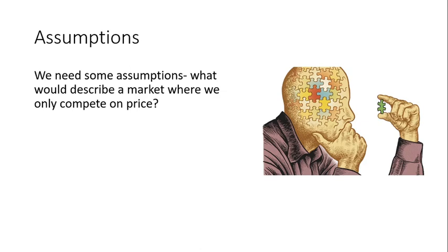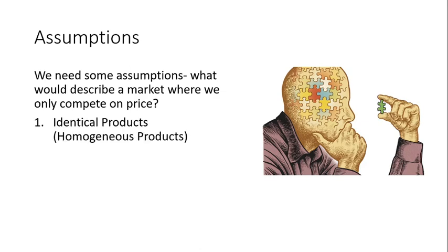The first key thing is the assumptions. We always want to start with the assumptions when looking at these new models. We want to describe a market where we only compete on price. Number one is identical or homogenous products — our products cannot be differentiated; there's no difference between our products and our competitors' products. Think about an apple orchard: they're growing a certain type of apple, say a Gala apple. That Gala apple is the same as any other grower's Gala apple. You cannot brand or make your apples different from your competitors'.